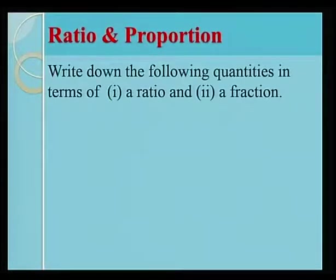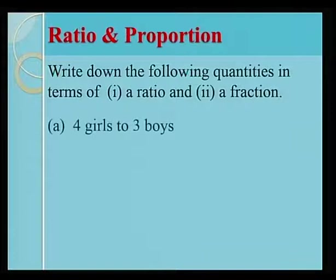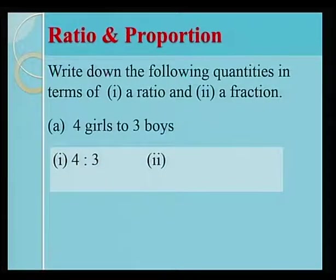Write down the following quantities in terms of a ratio and a fraction. 4 girls to 3 boys, 4 is to 3, and 4 over 3 as a fraction.